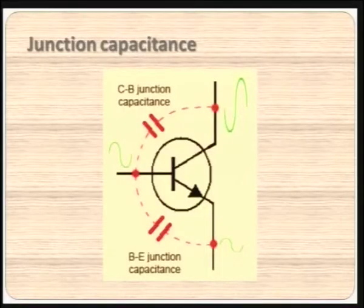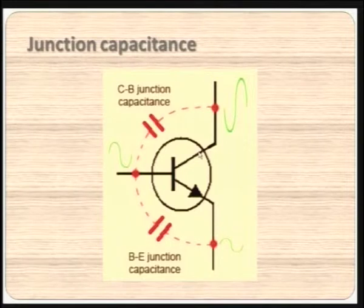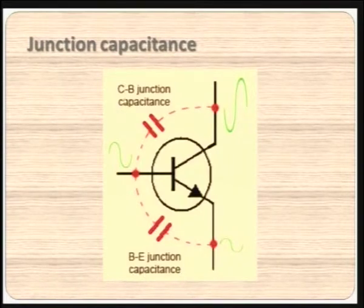We could even vary the capacitance value by changing the doping and maintaining the reverse voltage across the PN junction. So we have two capacitances across the two junctions. Looking at a typical transistor diagram: the arrow mark shows the emitter, and there is the base and the collector terminal. There are two junctions — the emitter-base junction and the collector-base junction — with the BE junction capacitance and the CB junction capacitance.